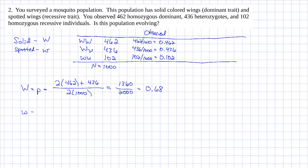Our recessive allele frequency is q. We get 2 times 102, plus 436, divided by 2 times 1000. I get 640 divided by 2000, for an allele frequency of 0.32.